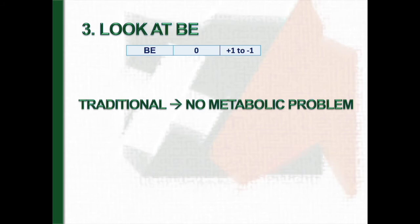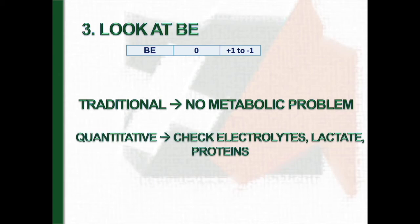The third step is to look at the base excess. In this case, it is equal to zero. Therefore, they are within the normal range of normality. In case that we only interpret the blood gases based on the traditional method, no metabolic disturbances are detected. But it's important to remember that it's possible to have metabolic alterations without base excess changes, and that happens in this foal.